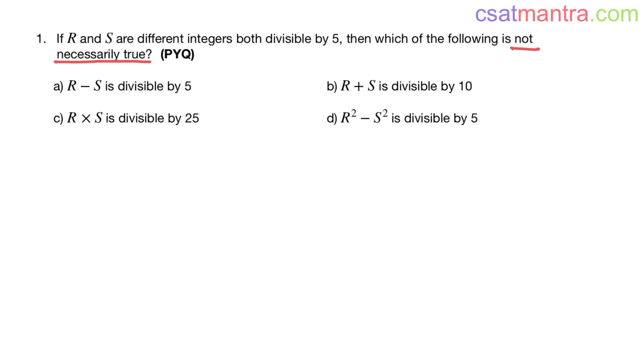So let's take two simple numbers which are divisible by 5: 10 and 15. I am taking R as 15 and then S as 10.